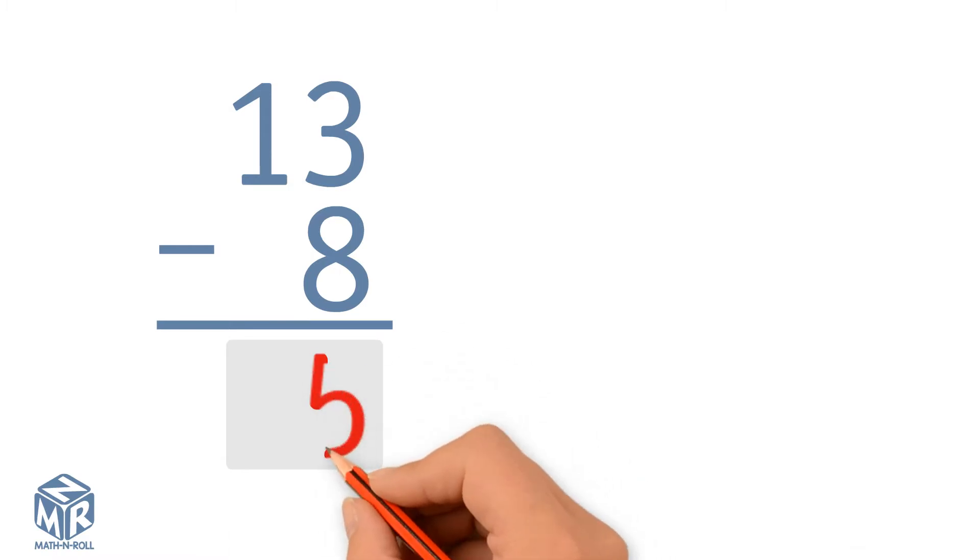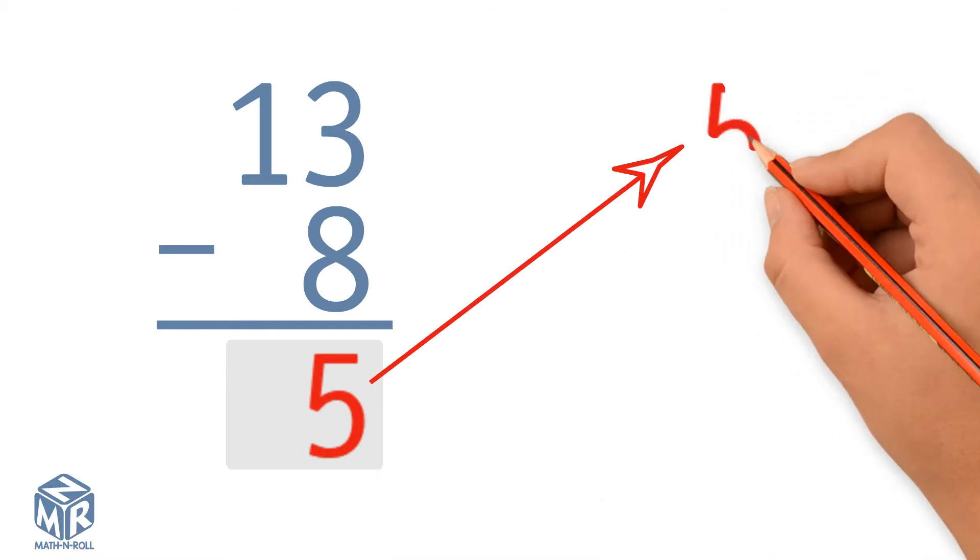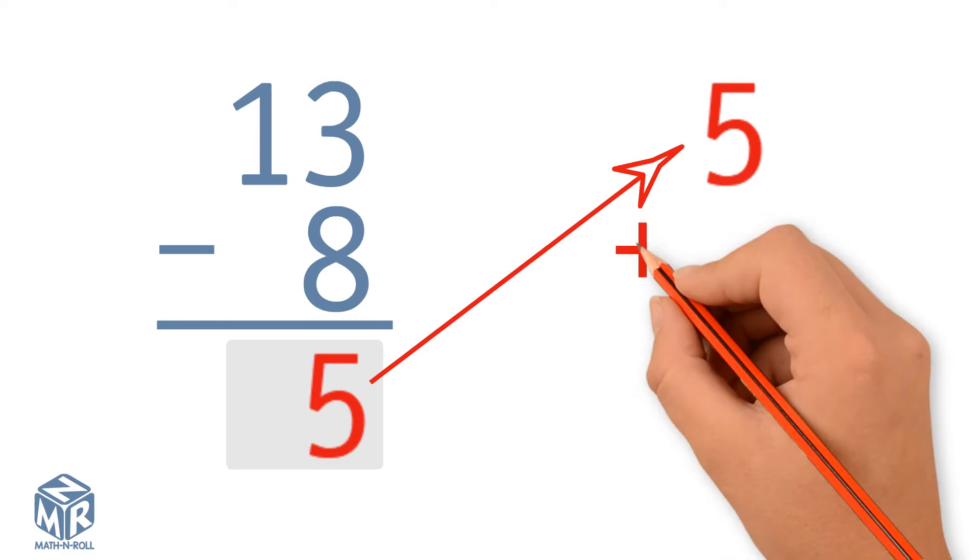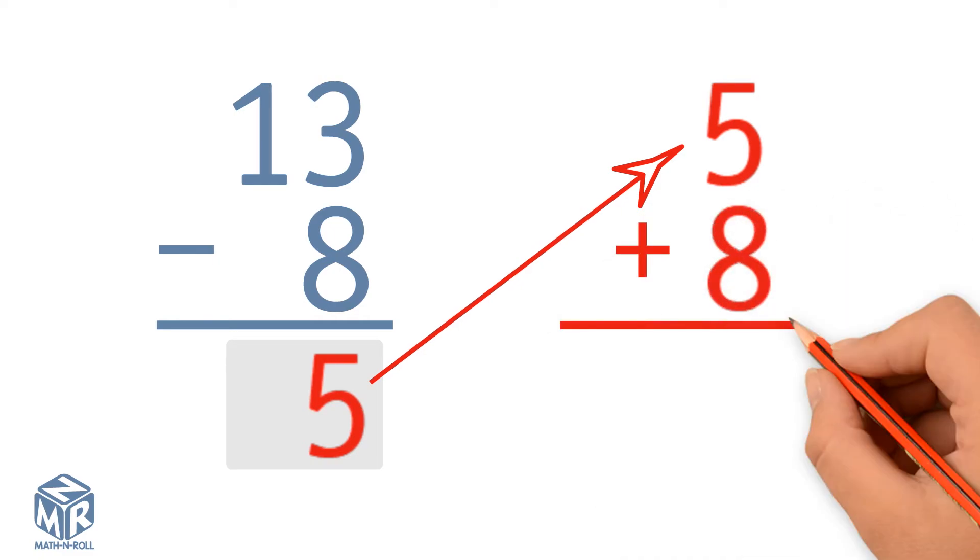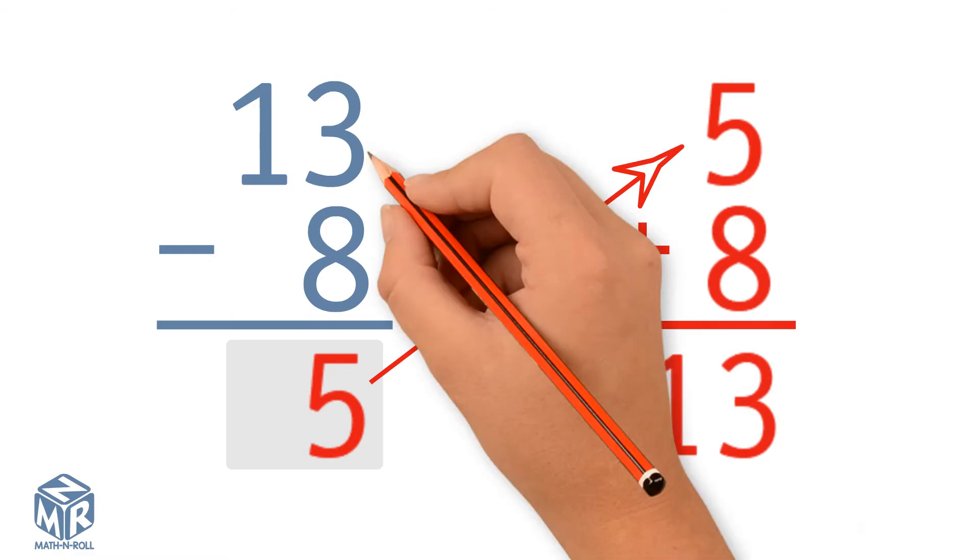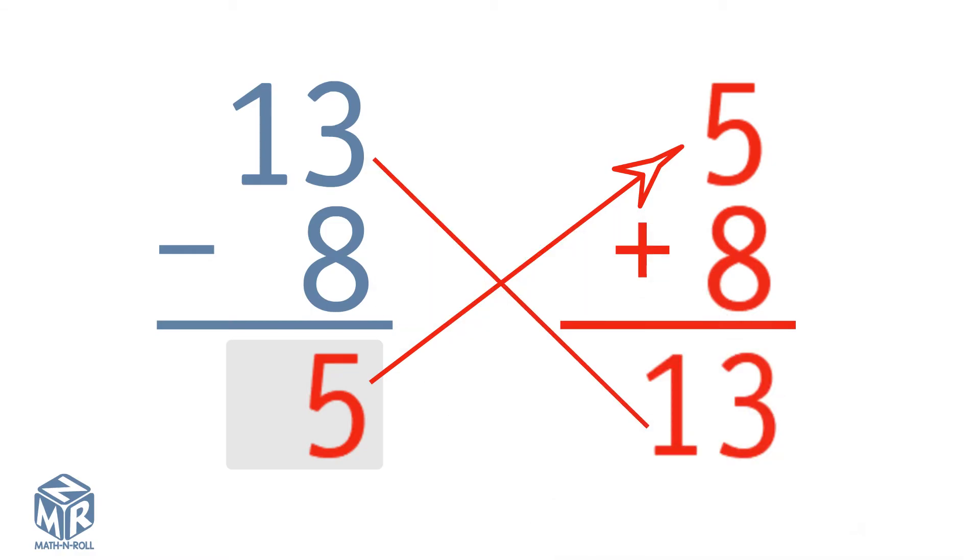Let's try another example. 13 minus 8 equals 5. 13 is the whole, and 8 and 5 are parts. To check our subtraction, we use addition. We add the parts. 5 plus 8 equals 13. 13 equals 13, so our subtraction was correct.